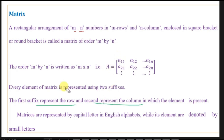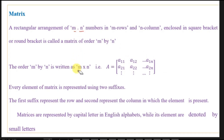So this is the simple definition of a matrix. A matrix is nothing but the rectangular arrangement of columns and rows enclosed in a square bracket. If there are M rows and N columns, then the order of the matrix is M cross N.